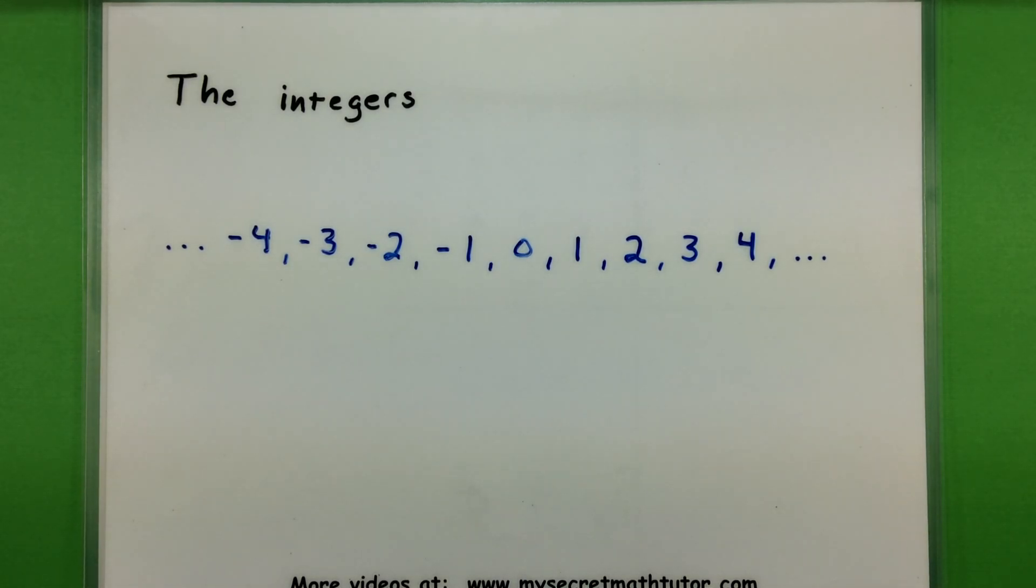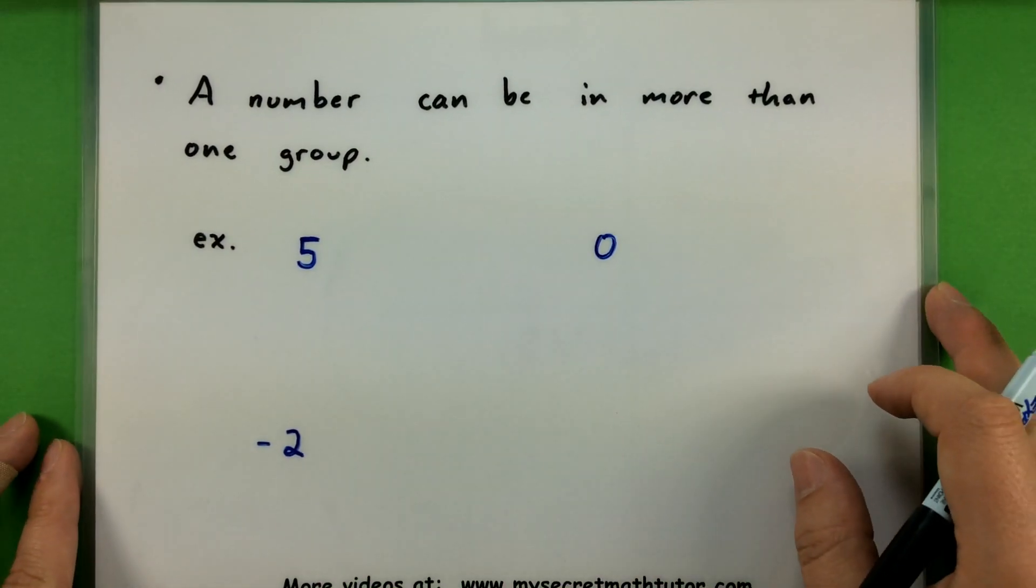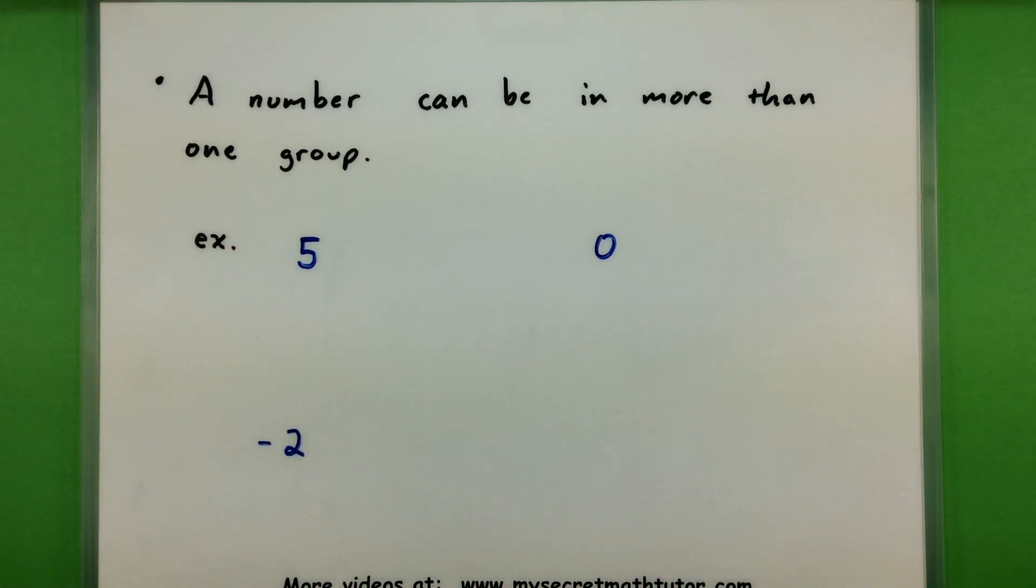So one thing that you've probably seen is that I've shown you three groups right now: the natural numbers, the integers, and the whole numbers, but I've listed out the same number more than once in some of these groups. One thing that you want to keep in mind as you're learning about these new groups is that a number can be in more than one group. It's completely okay.